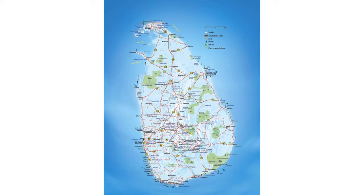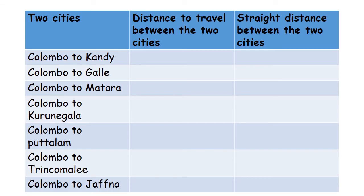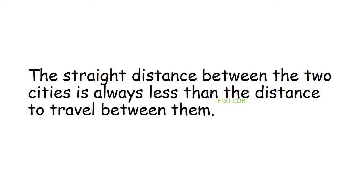After that, tabulate your findings. The table has columns for the two cities, the distance to travel between them, and the straight distance between them. By completing this table, you will understand that the straight distance between two cities is always less than the distance to travel between them.